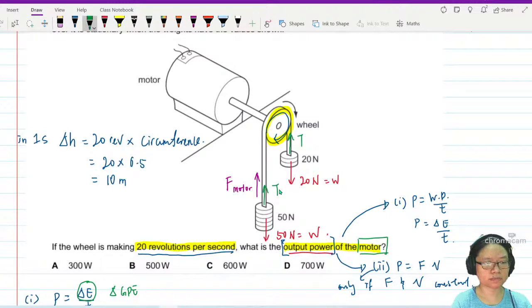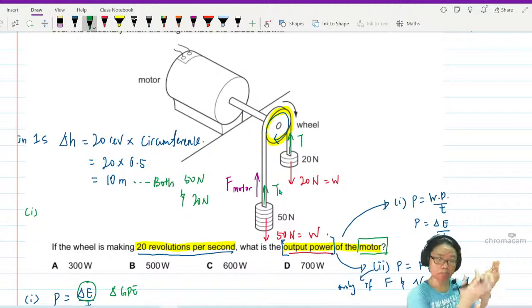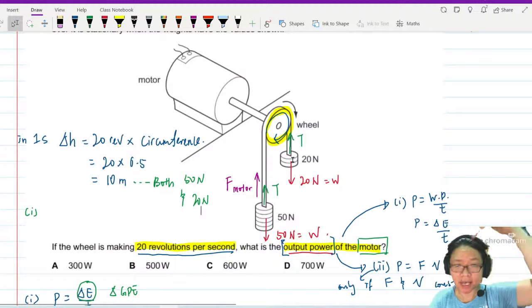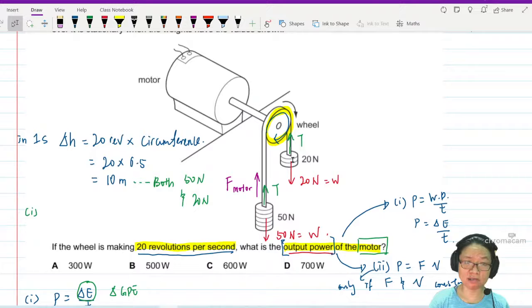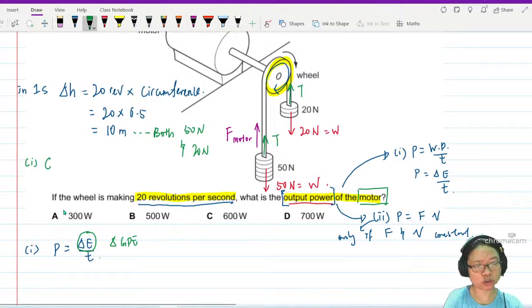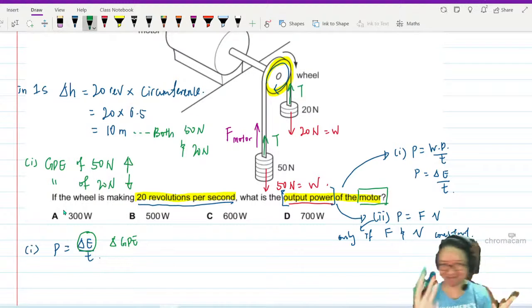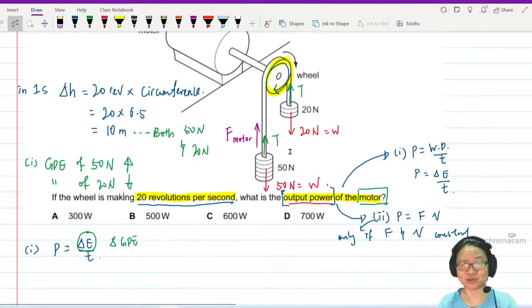So take note, the delta H of 10 meter is for both 50 Newton and 20 Newton. Because wait a second, 50 Newton is being lifted up. So the change in GPE for the 50 Newton is increased. But the 20 Newton is being let down. So the change in GPE for 20 Newton is decreased. So this 10 meter means that gravitational potential energy of 50 Newton increases. But gravitational potential energy of 20 Newton decreases. So you have to use your imagination and then imagine what's going on to the pulley. Some will go down, some will go up.